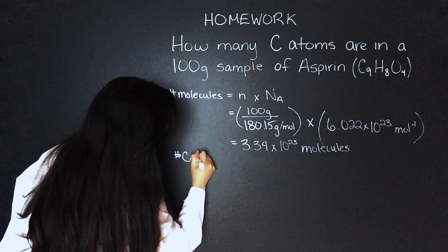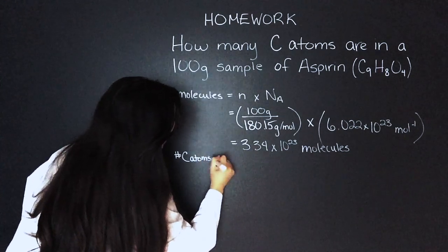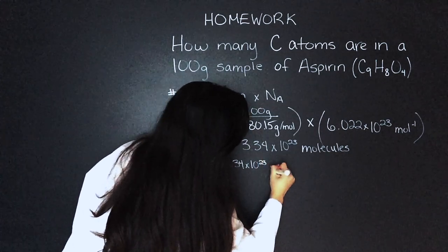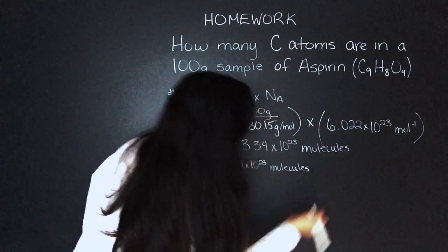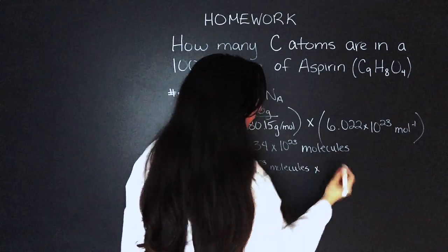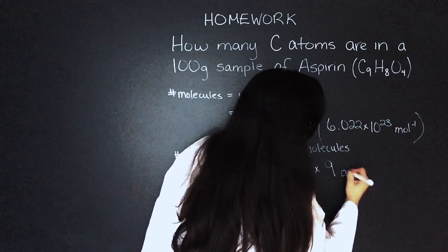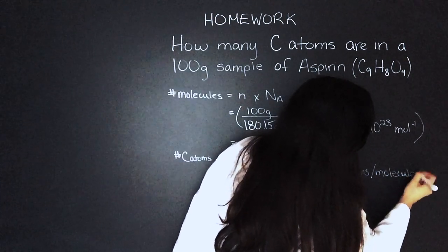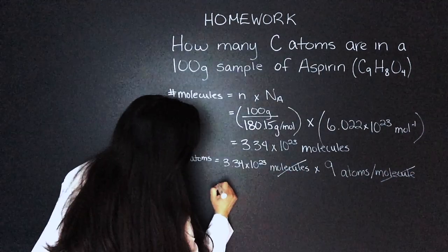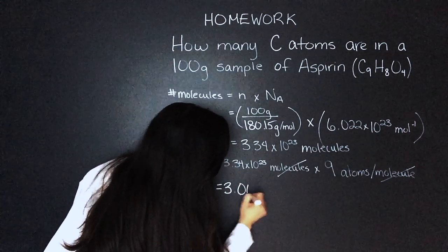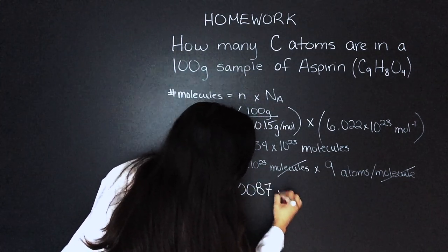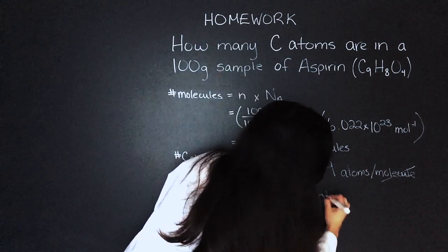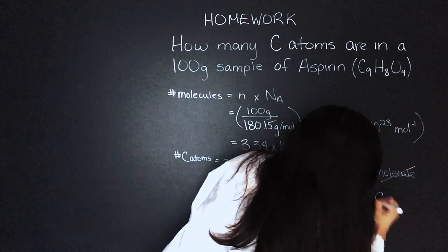Number of carbon atoms equals 3.34 times 10 to the 23 molecules times 9 carbon atoms per molecule. We're left with 3.01 times 10 to the 24 atoms of carbon.